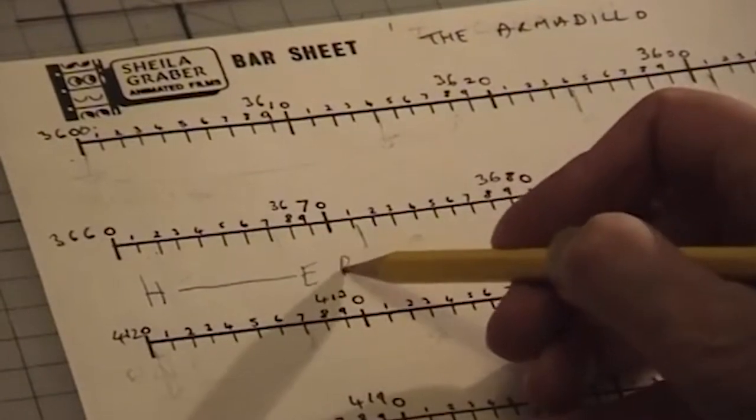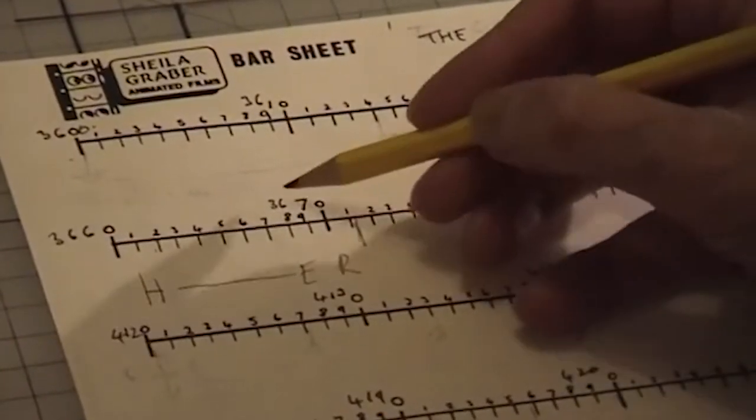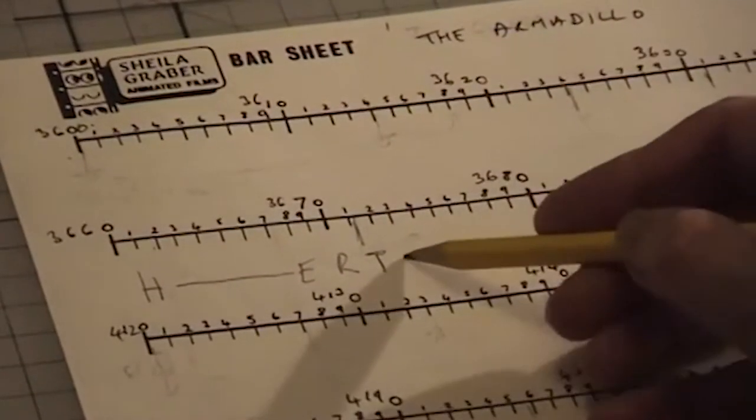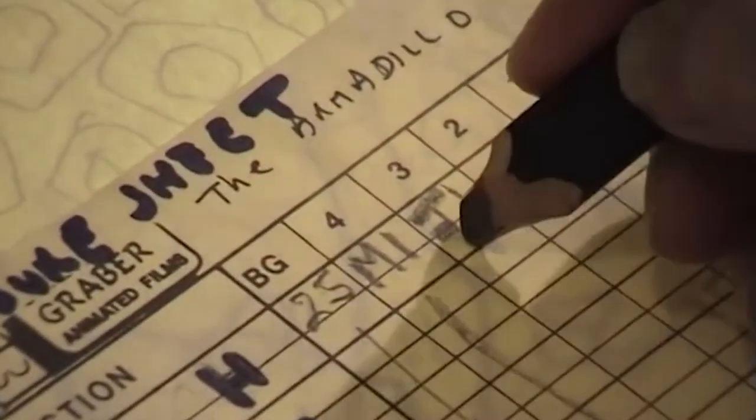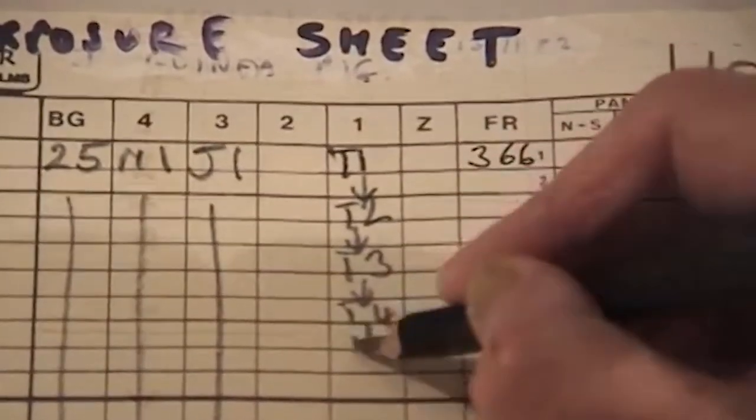A bar sheet is used to put words as well as actions against frame numbers, typically for an entire scene, so animators know exactly how long the dialogue and actions last frame-by-frame. Then there's the exposure sheet, which combines the timing chart and the bar sheet in one place. It shows how long each action lasts across multiple layers, shows dialogue timings, and covers pretty much the entire production. It's a very long document that puts everything in one place.